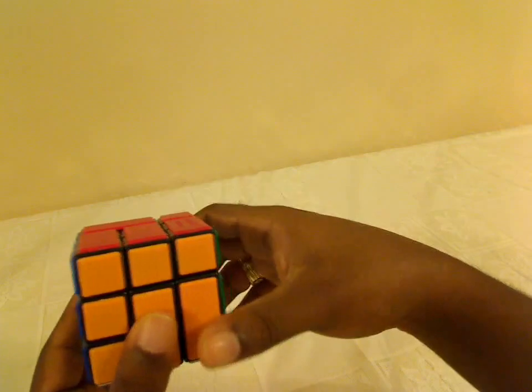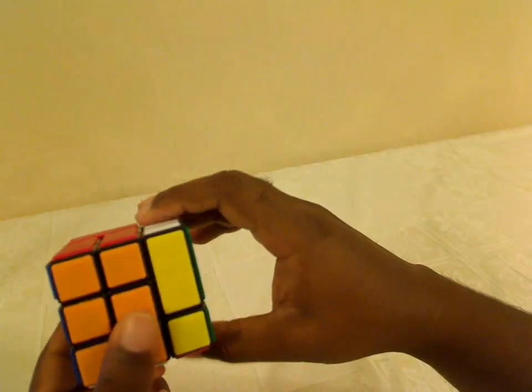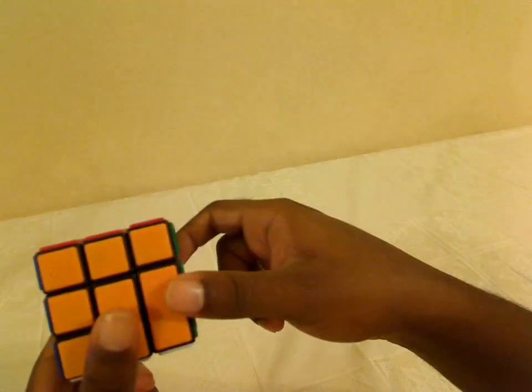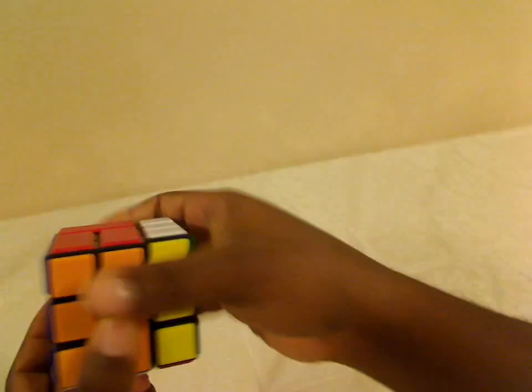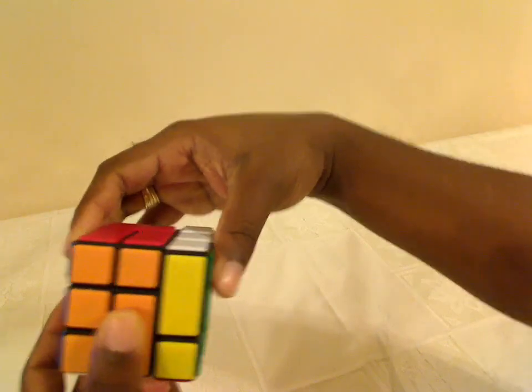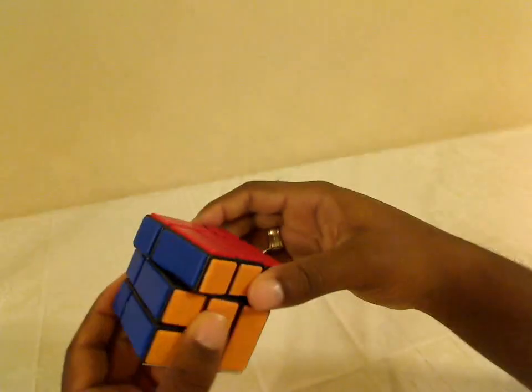The problem with solving a puzzle like this is that some turns you'd like to make, you can't make anymore. For example, if I turn this side 180 degrees and then try to turn across, I can no longer do it because these two pieces are joined together.